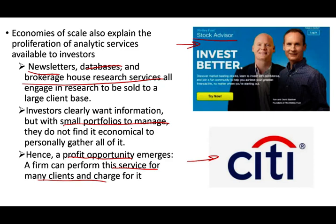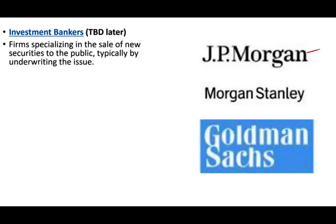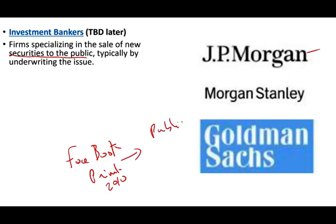Another form is investment bankers, which are different from commercial banks. Investment banks — like JP Morgan, Morgan Stanley, and Goldman Sachs — specialize in the sale of new securities to the public, typically by underwriting new issues. Think of Facebook: it was a private company and then went public. The investment bank sold Facebook's stocks to the public for the first time — this is the primary market, where new issues of securities are offered to the public and the company receives the proceeds.